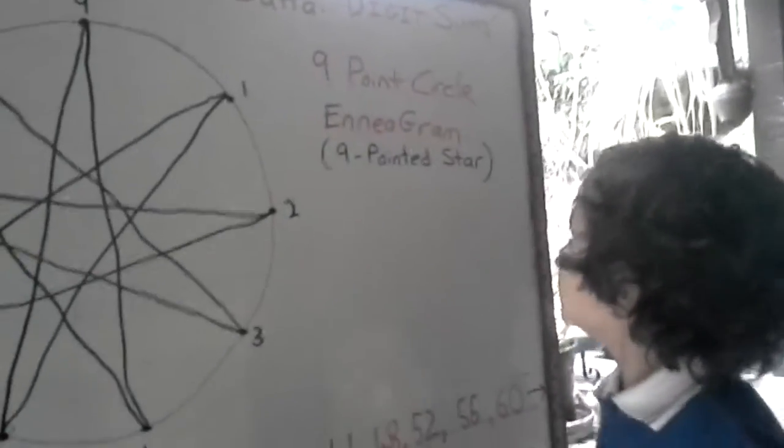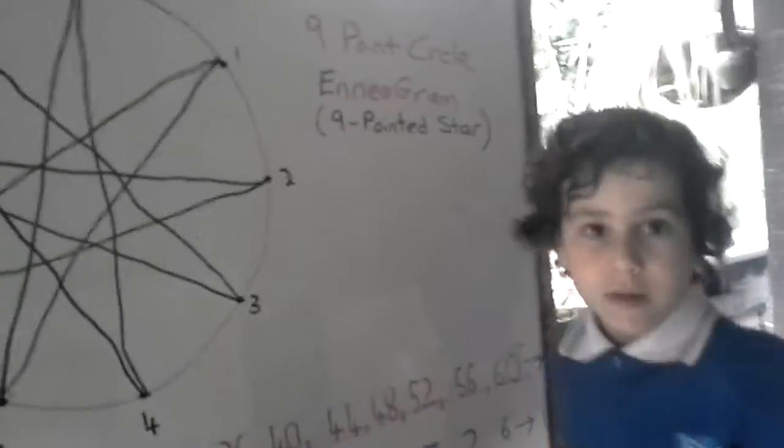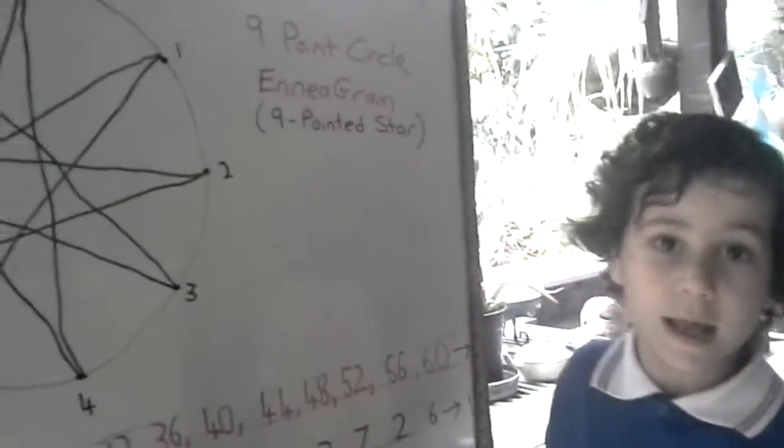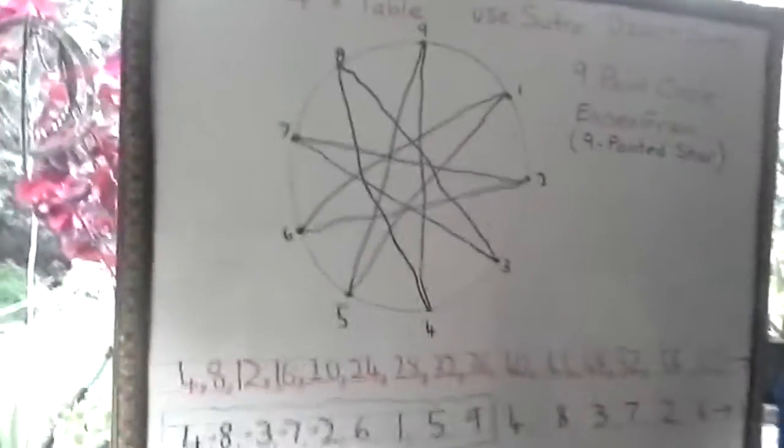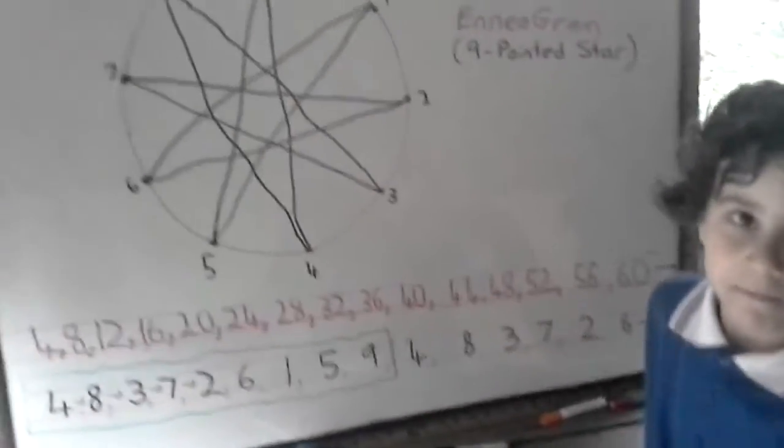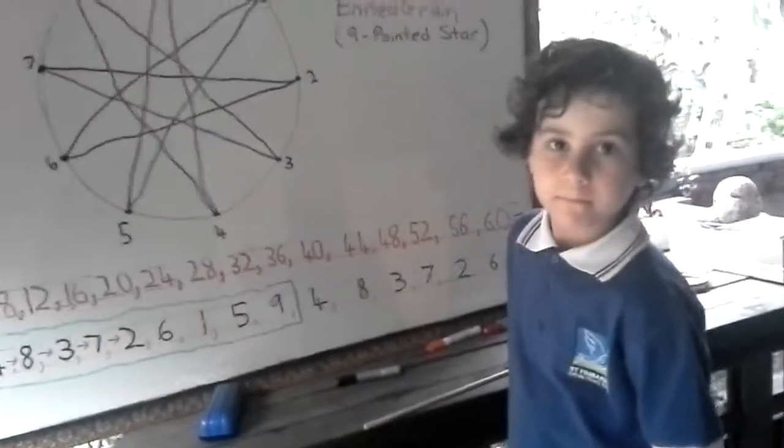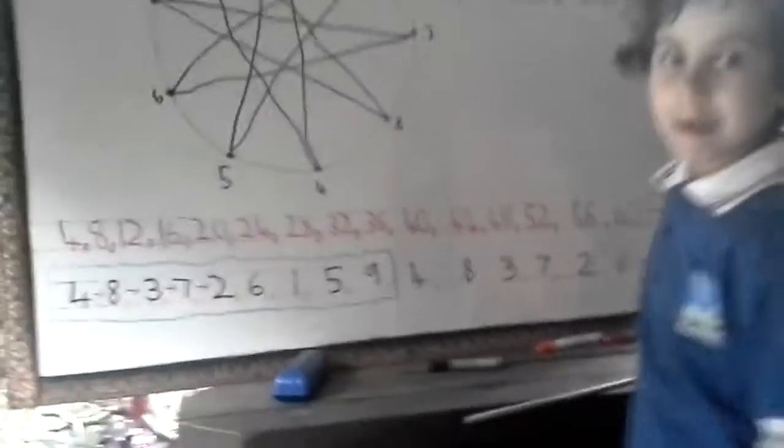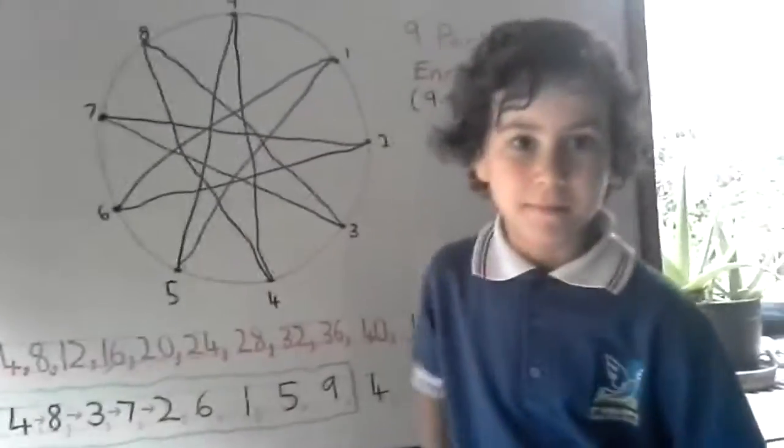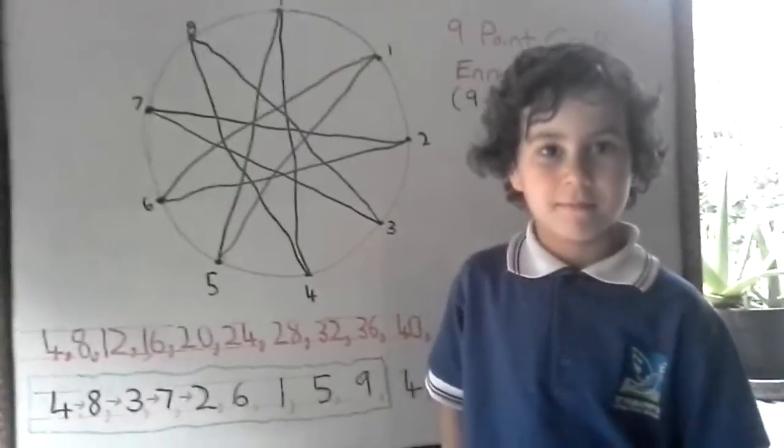What's the name of this star? This 9 pointed star. What's it called? Enneagram. Enneagram. So it's called the enneagram. It's a beautiful star. So the 4 times table made a highly symmetric pattern. That's wonderful to know that the 4 times table can produce such a beautiful elegant pattern. Thank you for showing us that Amir. I really appreciate that. That's beautiful. Bye.